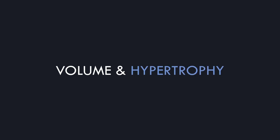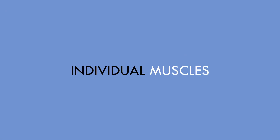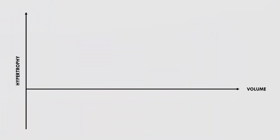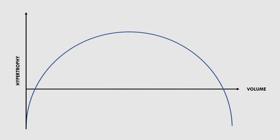This leads us to the volume-hypertrophy relationship — how volume impacts hypertrophy from both an individual muscle group standpoint and a systemic standpoint. The volume-hypertrophy relationship describes the relationship between volume and muscle growth for an individual muscle group. This seems to follow an inverted U-shaped relationship, meaning more volume is better up to a point, and performing more volume beyond this point results in less muscle growth. So there is a sweet spot which results in the best response for each individual muscle group.